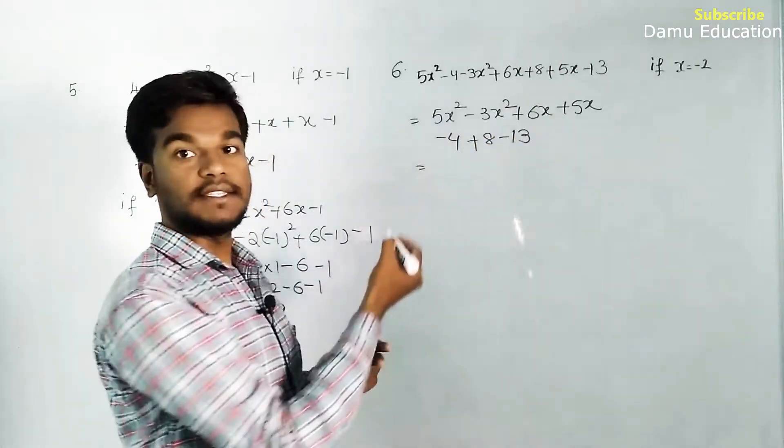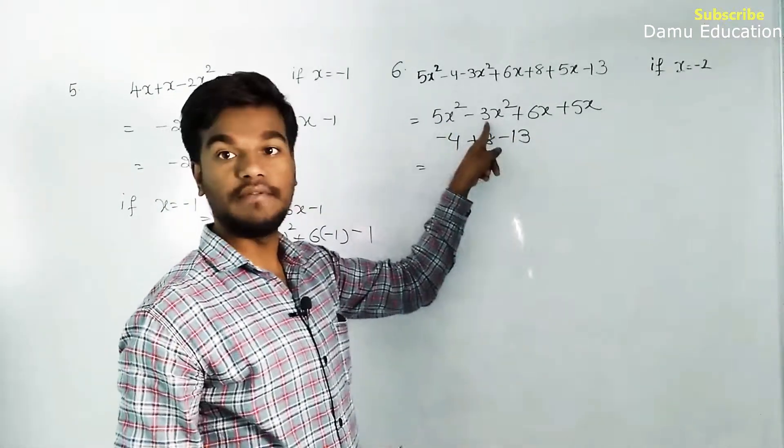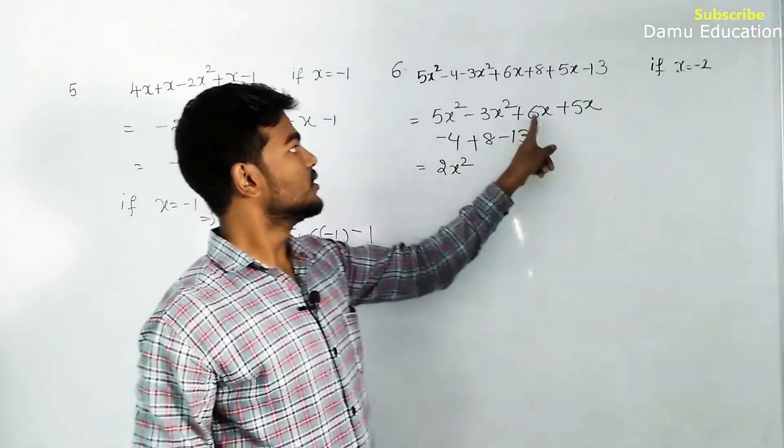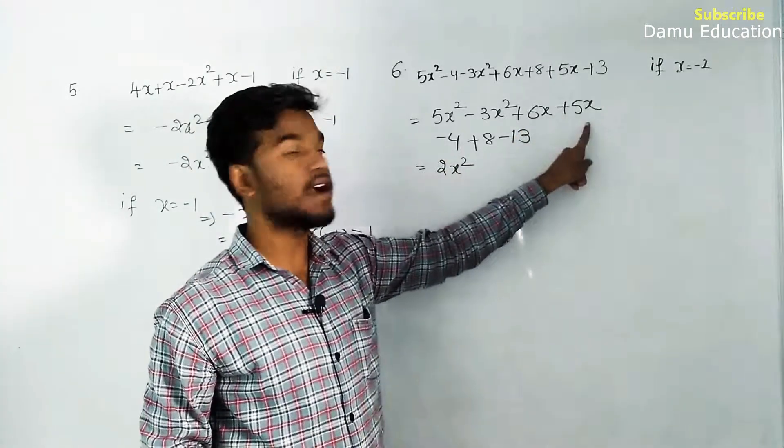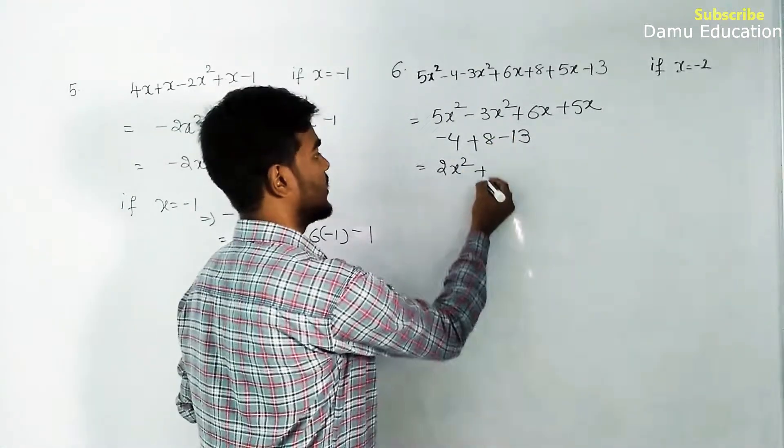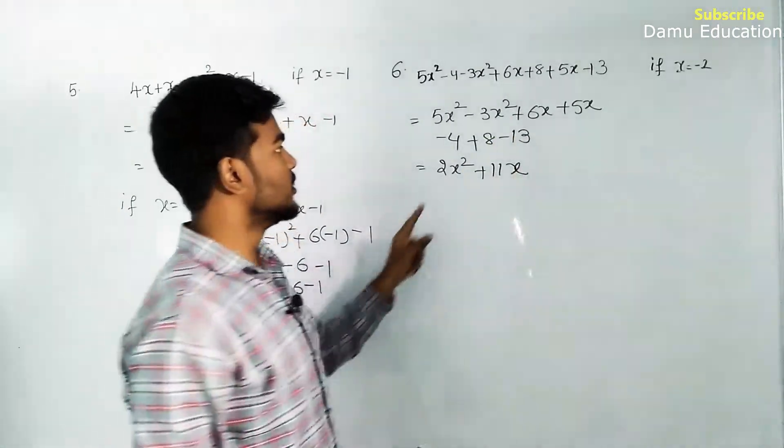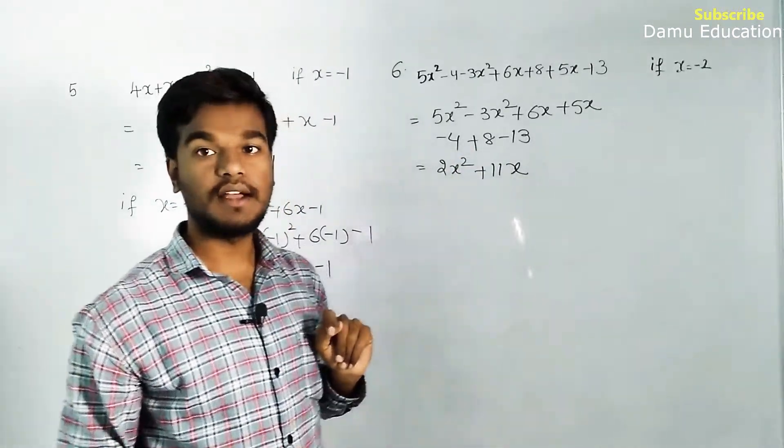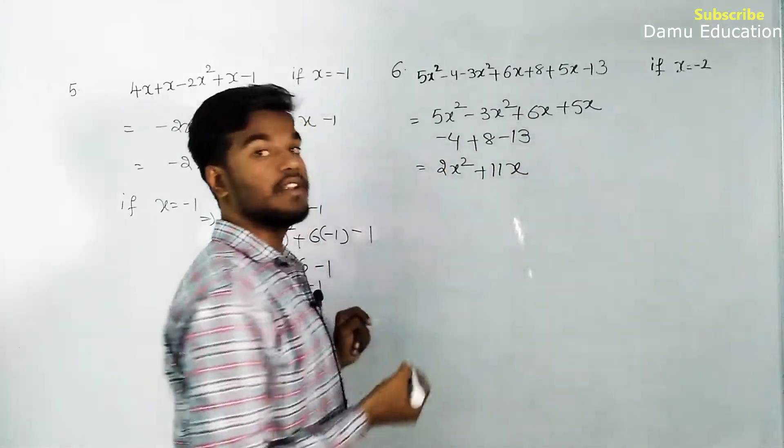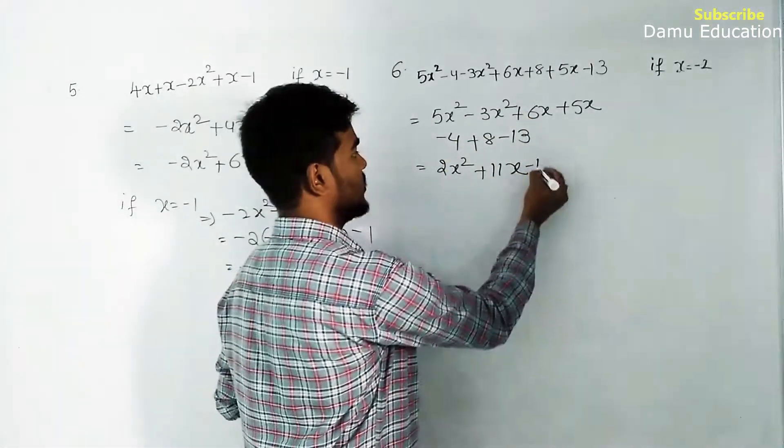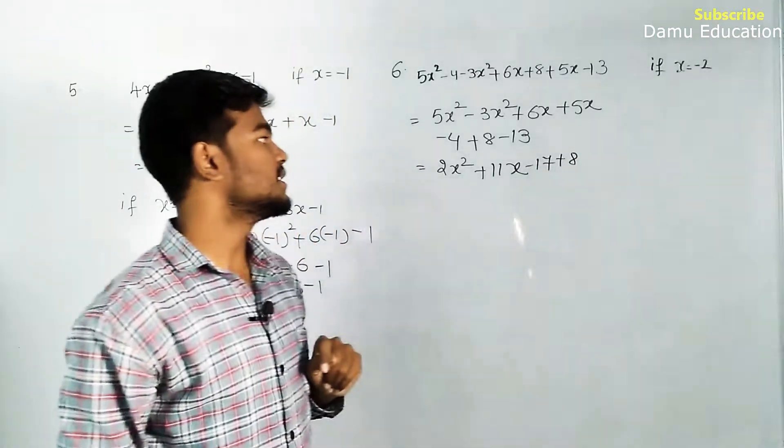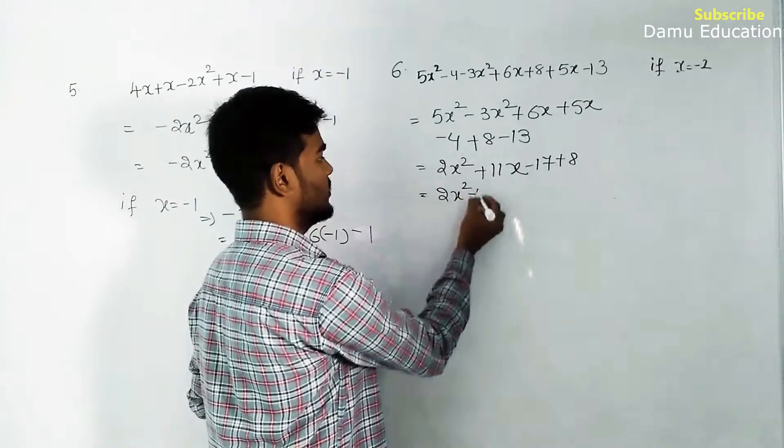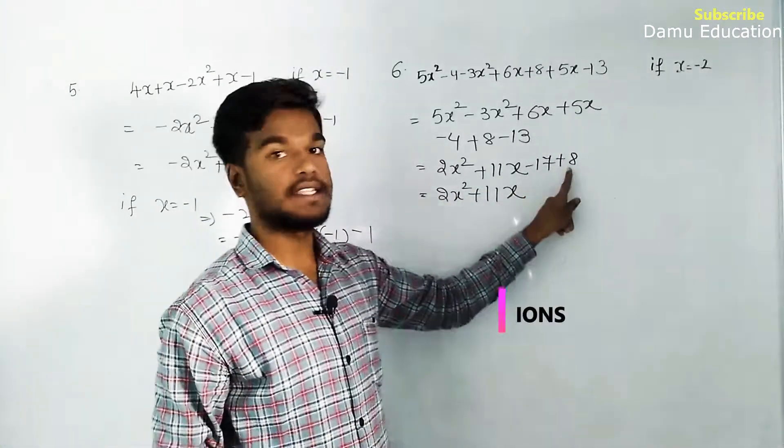Simplify: 5x² - 3x² = 2x². Then 6x + 5x = 11x. For constants, add the negatives: -4 - 13 = -17, plus 8. So 2x² + 11x - 17 + 8.